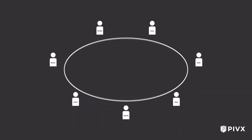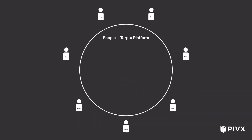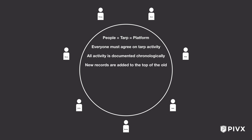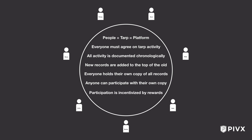So what have we learned so far? People plus a tarp equals a platform. Everyone must agree on tarp activity. All activity is documented chronologically. New records are added to the top of the old. Everyone gets their own copy of all records. Anyone can participate in the game with their own copy of the records. Participation in the game is incentivized by rewards. And bad behavior equals no reward.